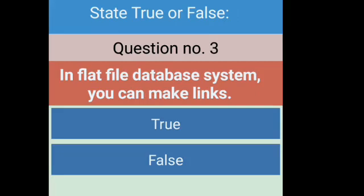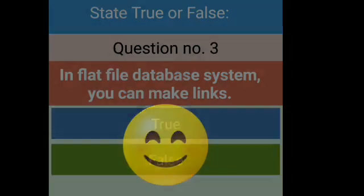Third question: in a flat file database system, you can make links. As we know, there are two kinds of database systems — flat file and relational. In a flat file database system, we cannot link the tables. In a relational database system, we can link the tables to each other. So this statement is wrong — the answer is false.